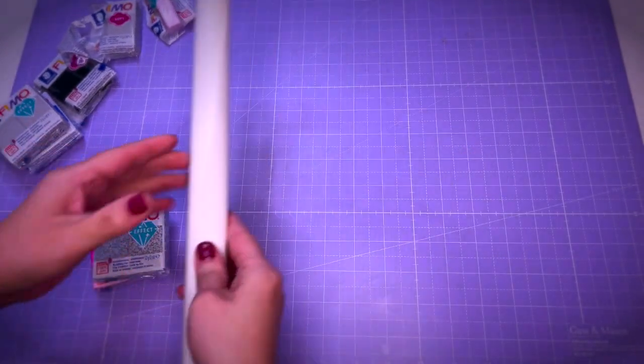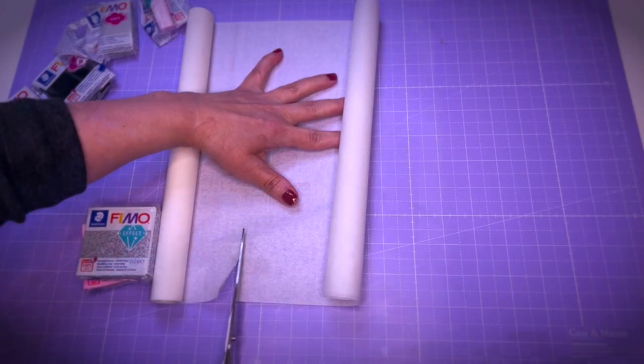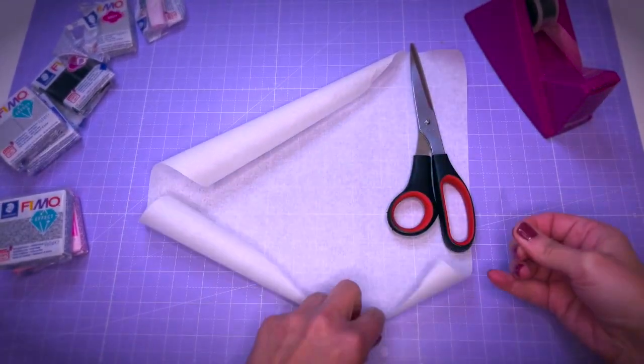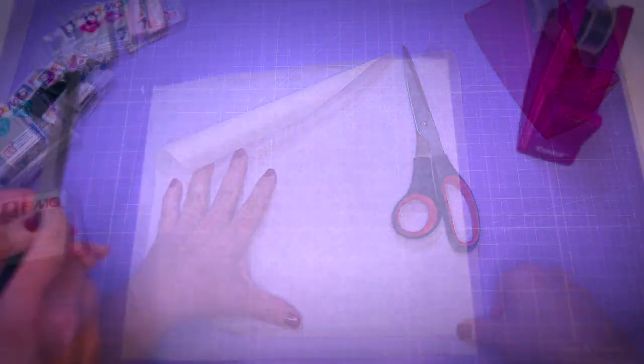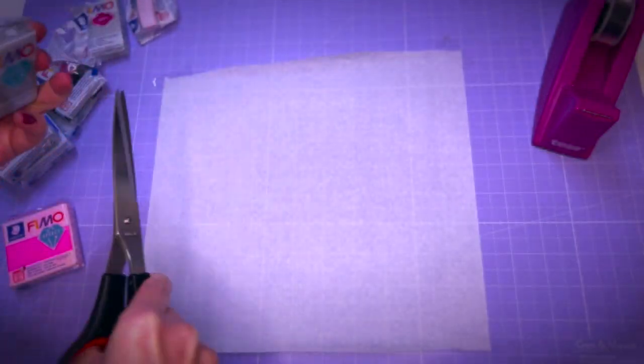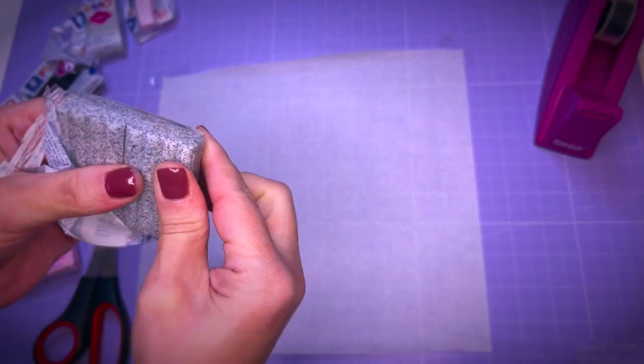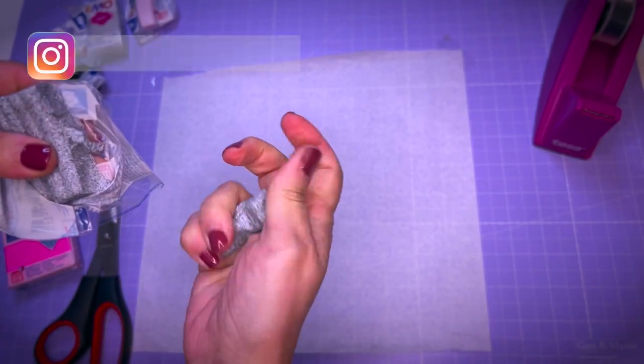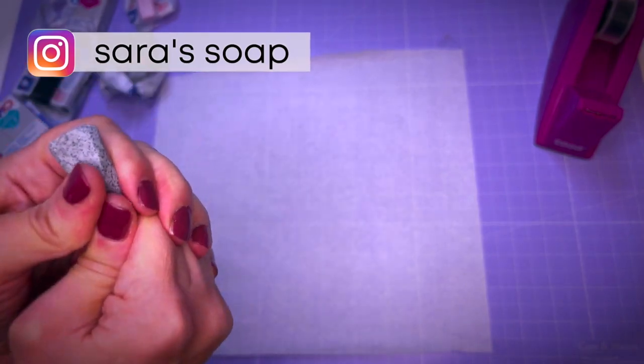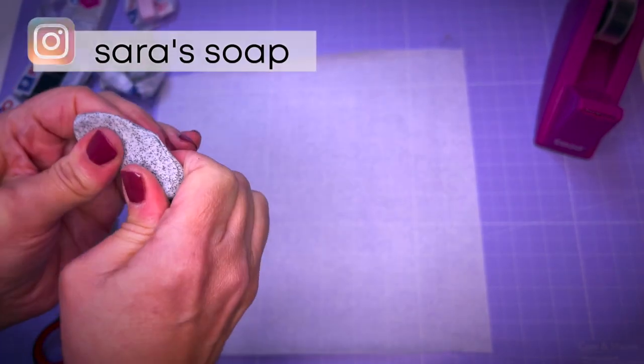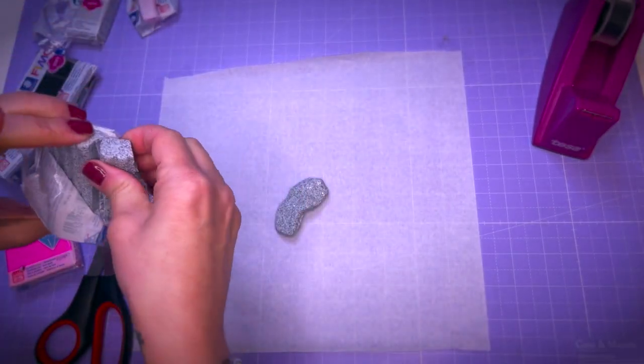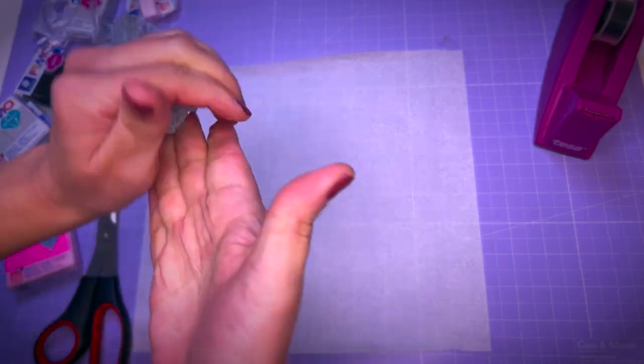Before starting I just put a baking sheet on my mat here to prevent the clay from sticking. I separate a portion of this silver clay. I will need a little more here for the size of the dish that I'm making. And then I start rolling out a string.